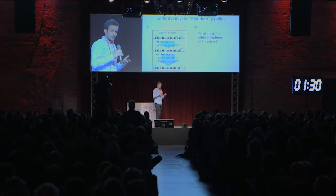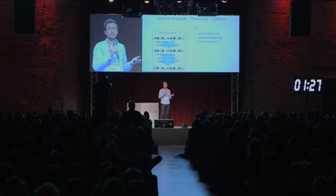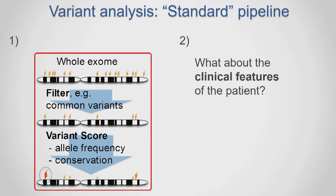For the use case I want to present here: assume we have a patient with several clinical features and we assume that genomic variation is of major importance in that patient case. So we sequence that patient — in our case exome data — and what we find is usually a lot of variation, these small yellow things.